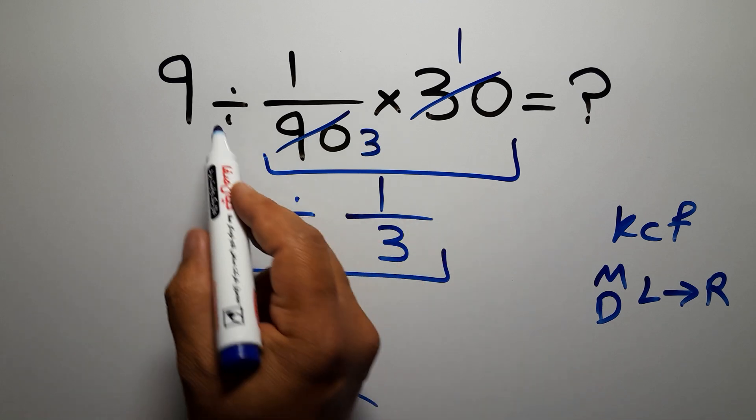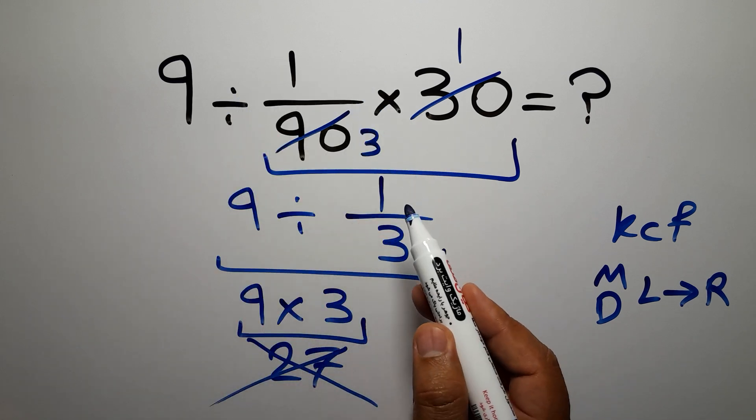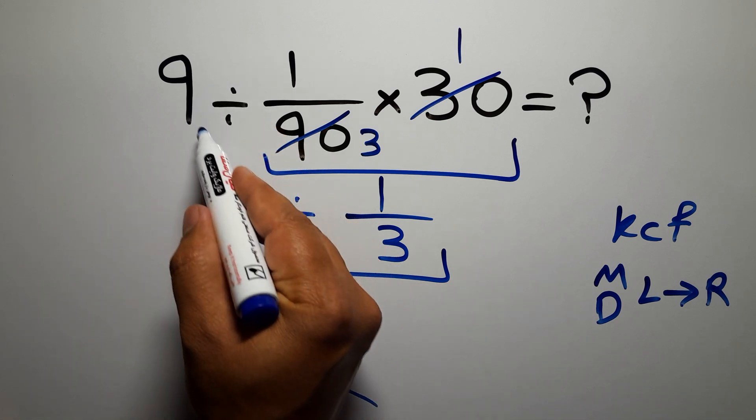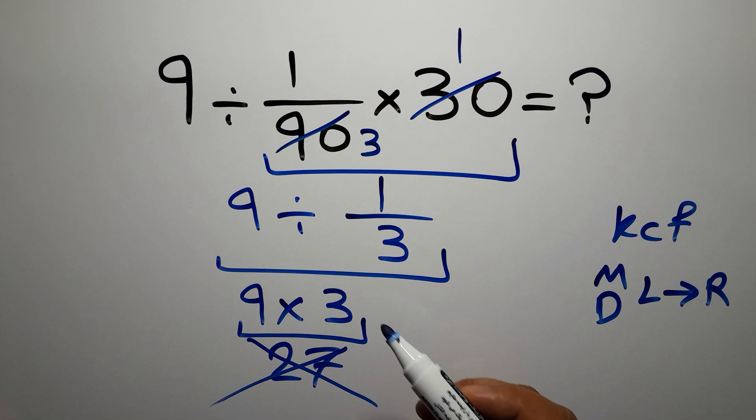Multiplication. If we do this multiplication before this division, it is wrong. So first we have to do this division, then this multiplication.